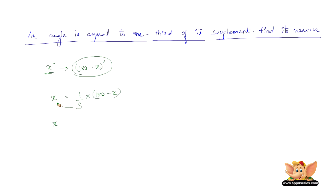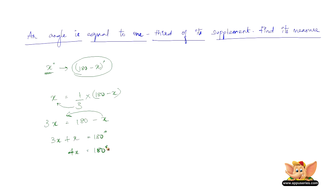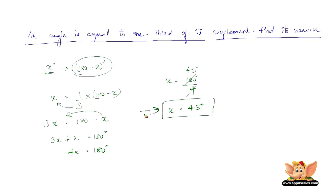Shifting the 3 across, we have 3x equals 180 minus x. Bringing x to the left-hand side: 3x plus x equals 180 degrees. So 4x equals 180 degrees, and x equals 180 divided by 4, which is 45 degrees. So an angle which is equal to 1 third of its supplement is 45 degrees.